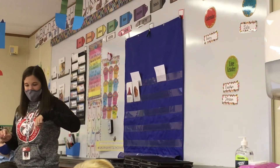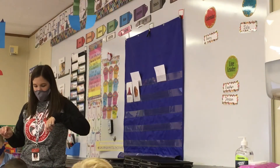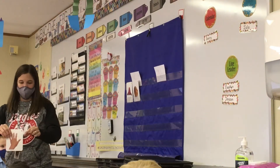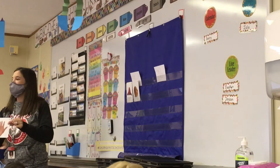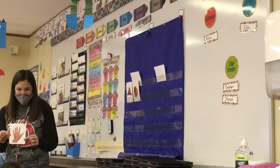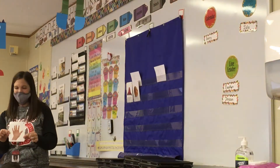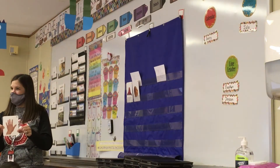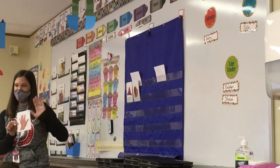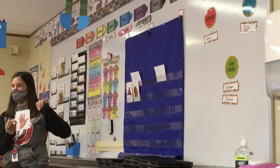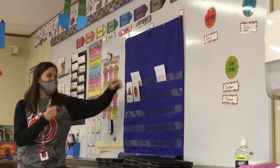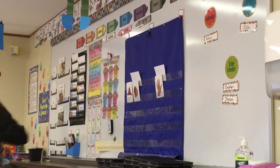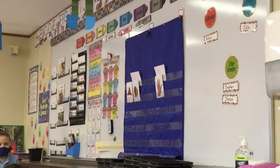Ethan, what do you have? What's this a picture of? Hand. Do you hear the end of hand? D. So does it end with a T? No. So it's got to go in the no column. You can't say the wrong thing.